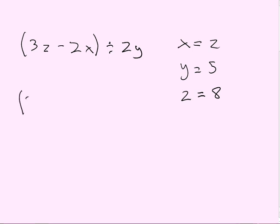So, open parenthesis, 3. Now, be careful, because you might think just because this is 3z, it might be 38. But actually, if there is no sign in between a letter and a number, or a number and a number, or a letter and a letter, then it's always multiplication.